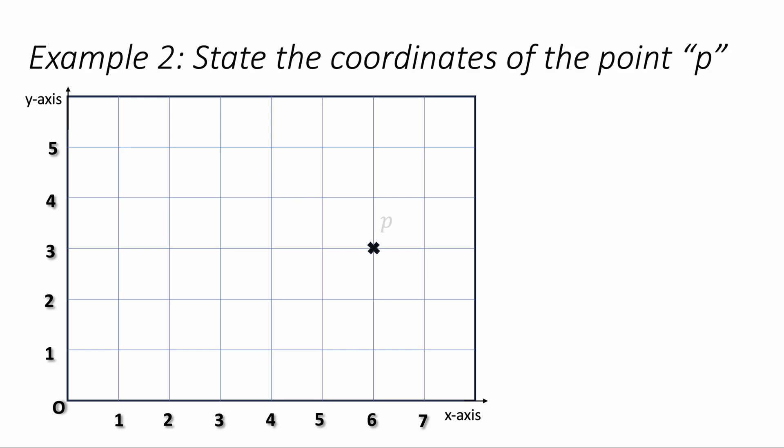You might also be asked to find the coordinates of a point like this one. We've got a point P on the screen and we want to find the coordinates of point P. I can see that there is 6 across and 3 up. So we write 6, 3. It's really important that it's in that order. The x-coordinate goes first and the 3 goes second.